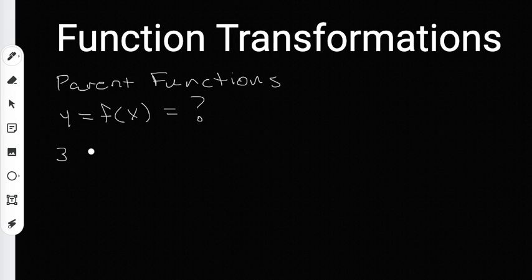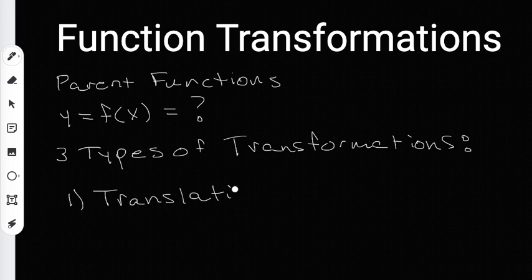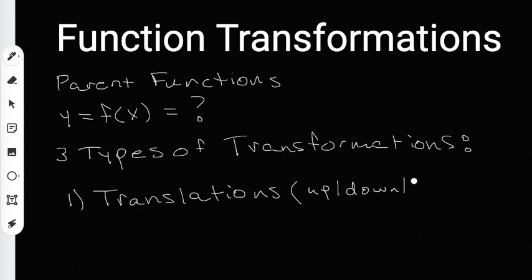There are three different types of transformations. The first type is called translations. Translations deal with moving something around — you could move something up, down, to the left, or to the right. Whichever direction you're moving, those are going to be called translations. So that's the first type.